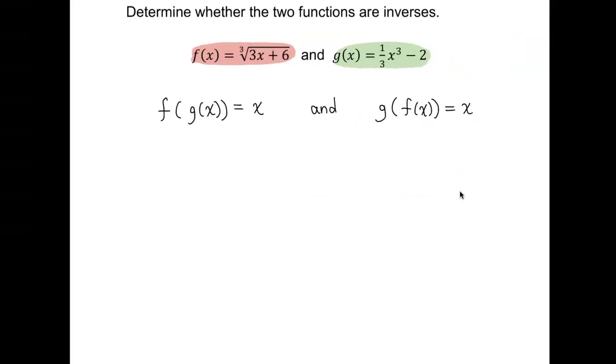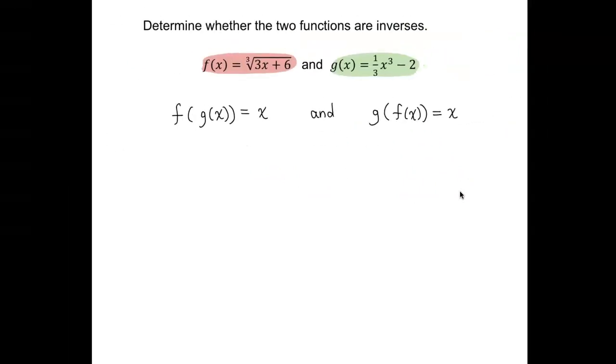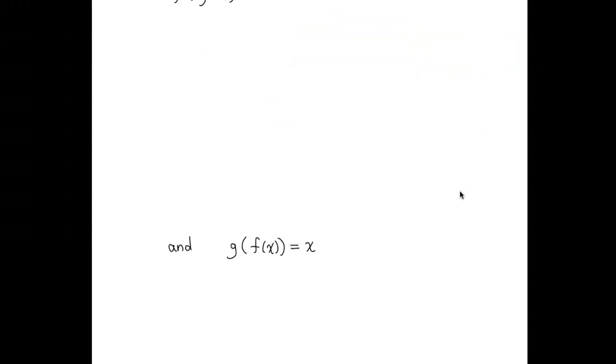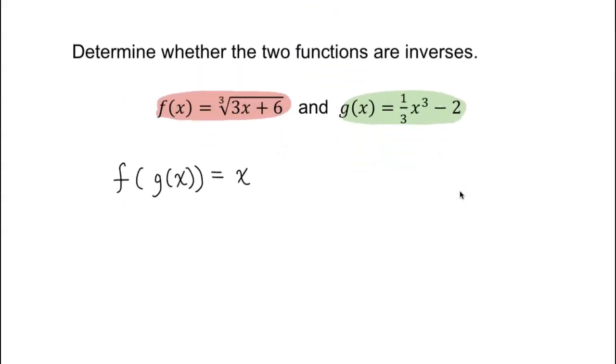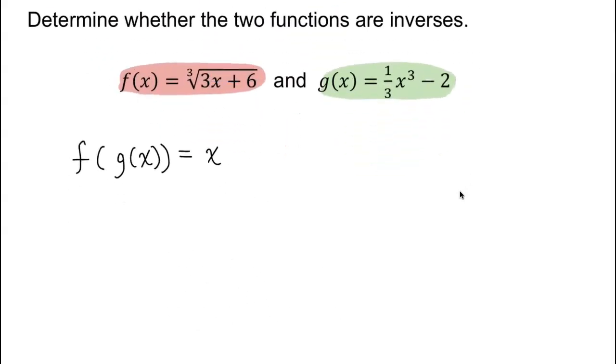So let's do one at a time. Let me move this second condition to the bottom. I'll handle that later. But let's start by checking f of g of x. So what I do is I circle g, and g is one-third x cubed minus 2, and we're going to draw an arrow to indicate that that is getting substituted in for x.